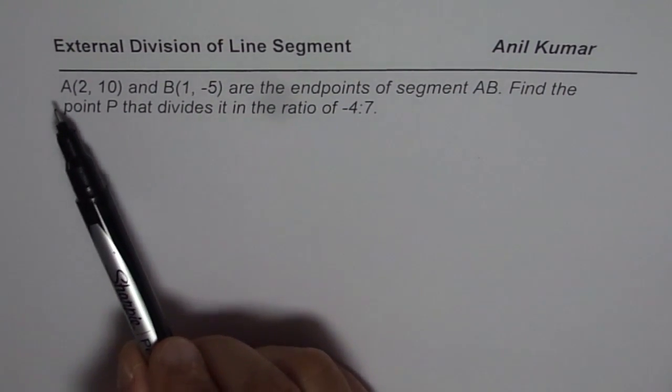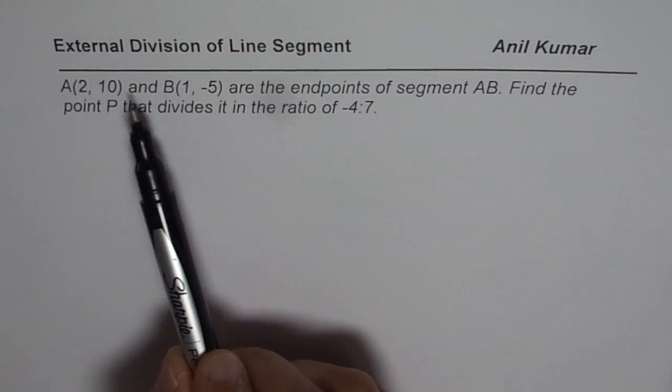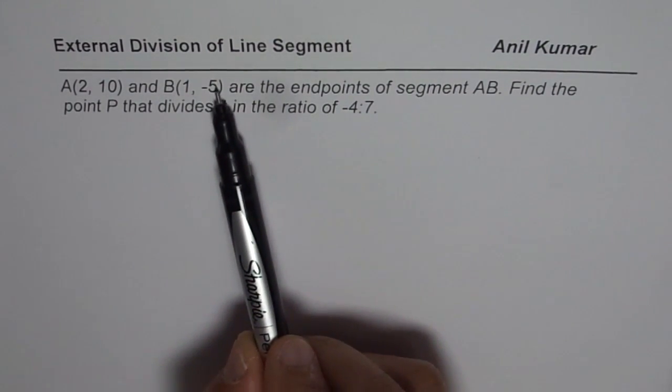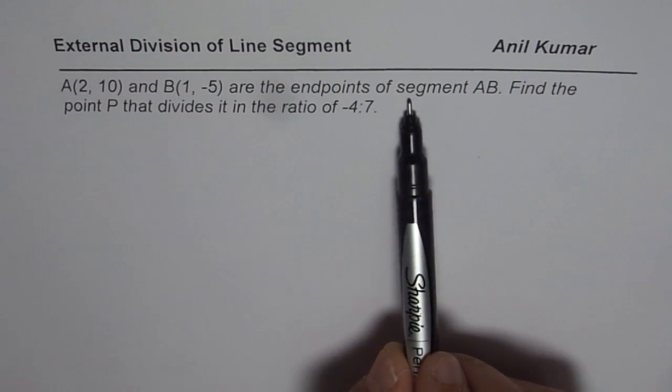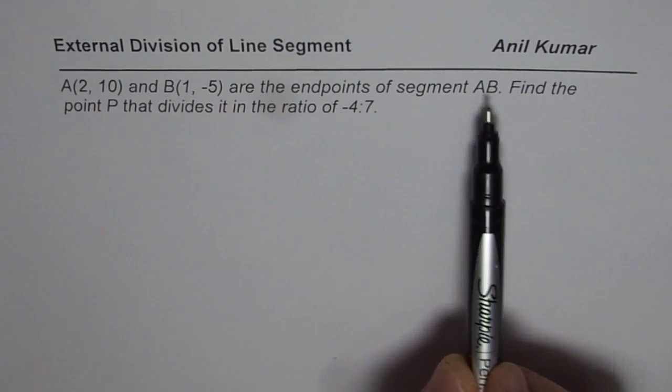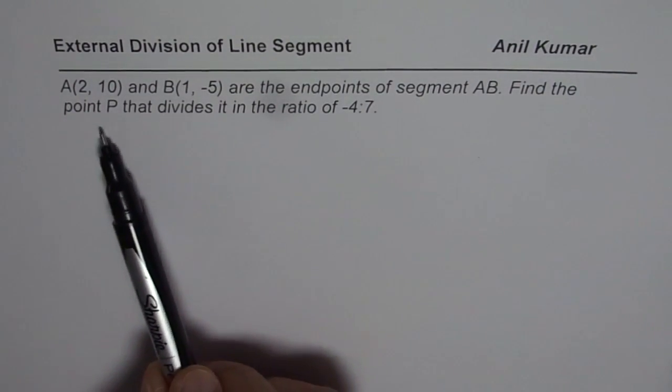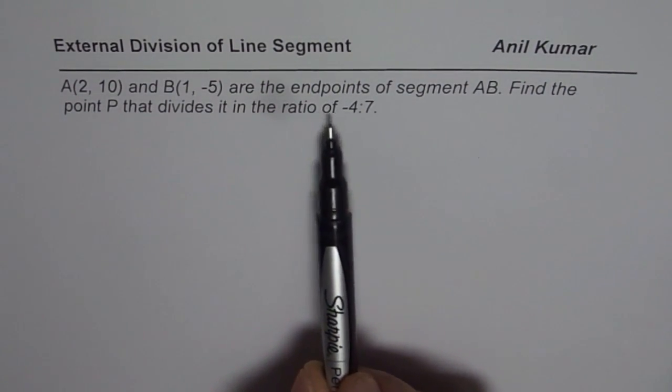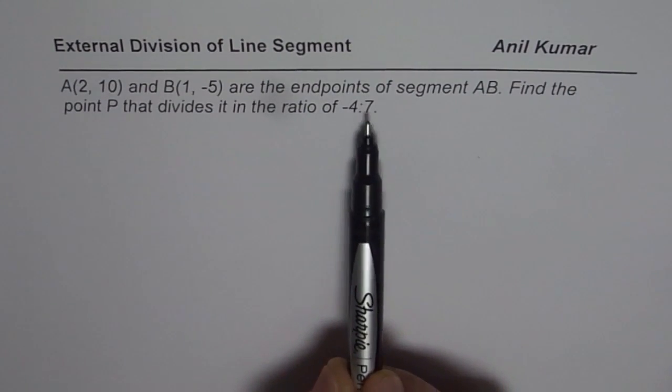The question here is A(2,10) and B(1,-5) are the endpoints of segment AB. Find the point P that divides it in the ratio of -4 is to 7.